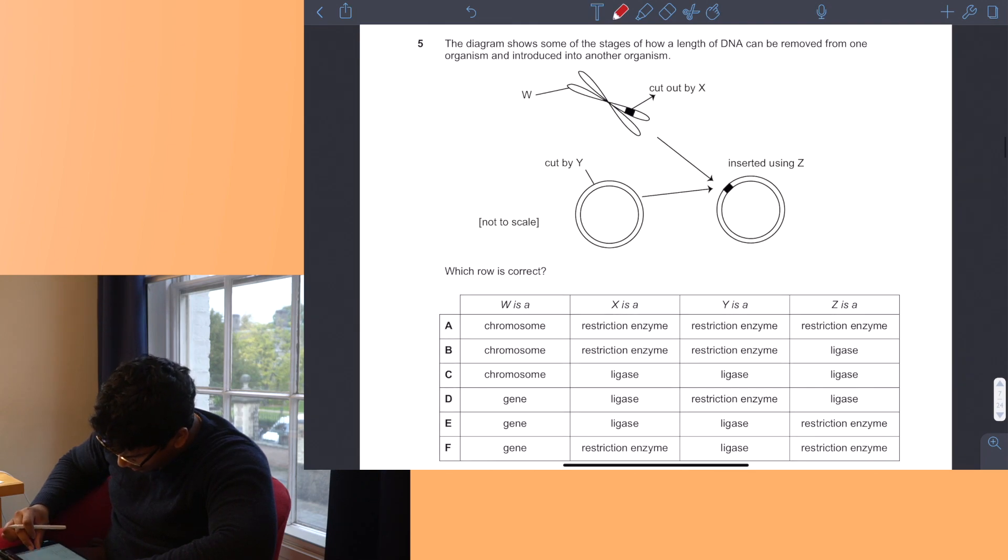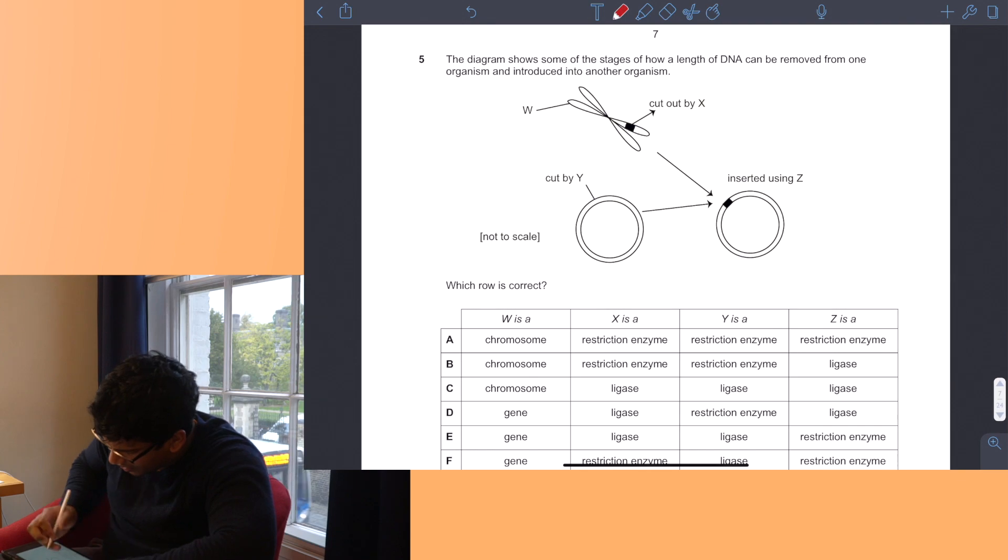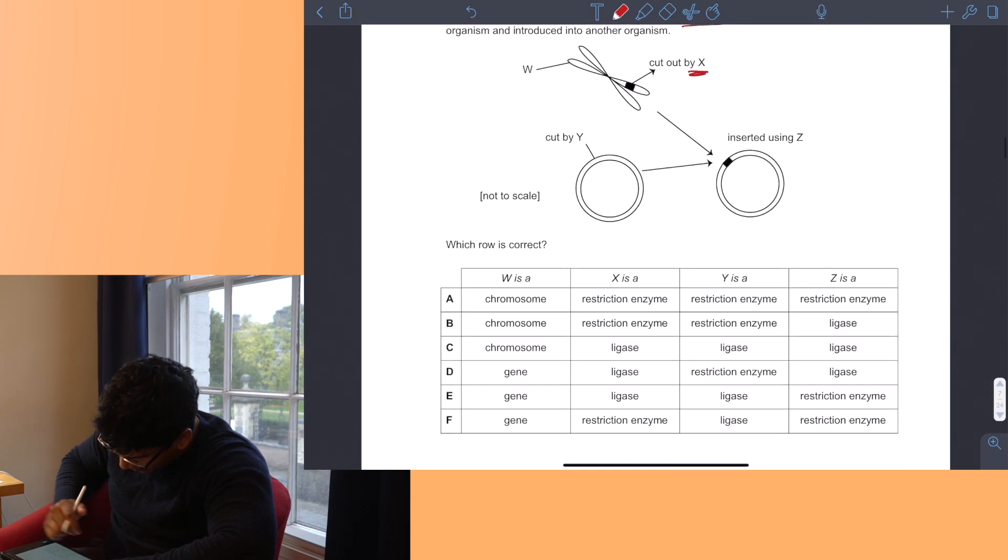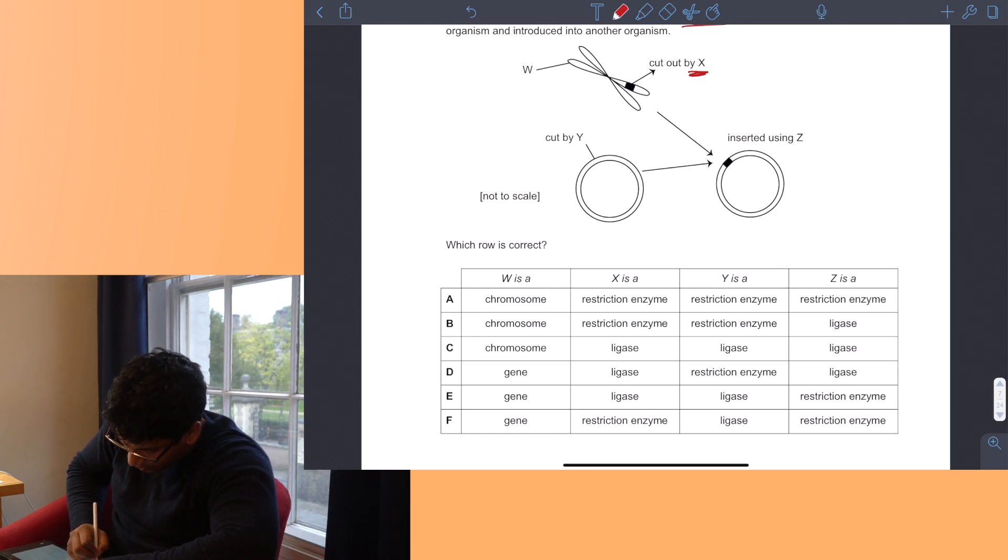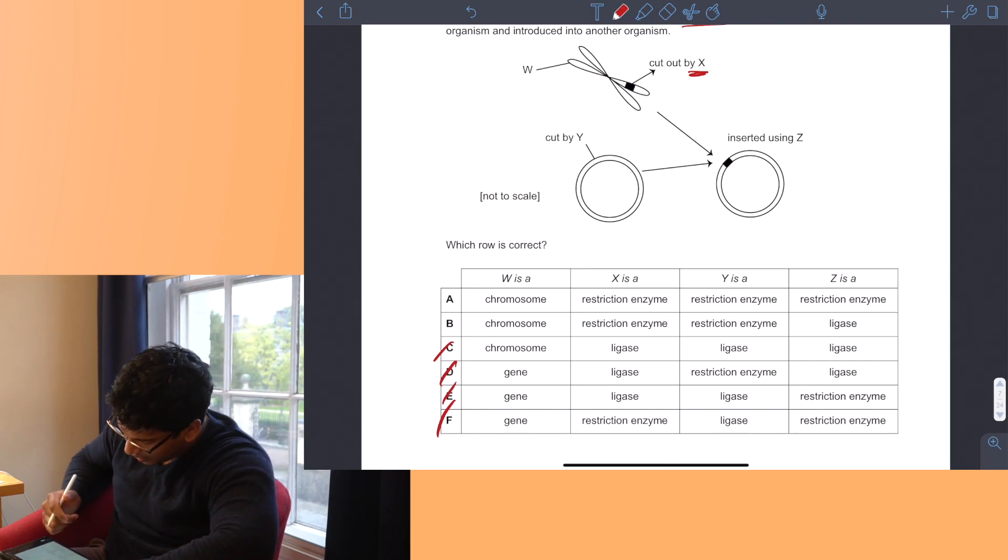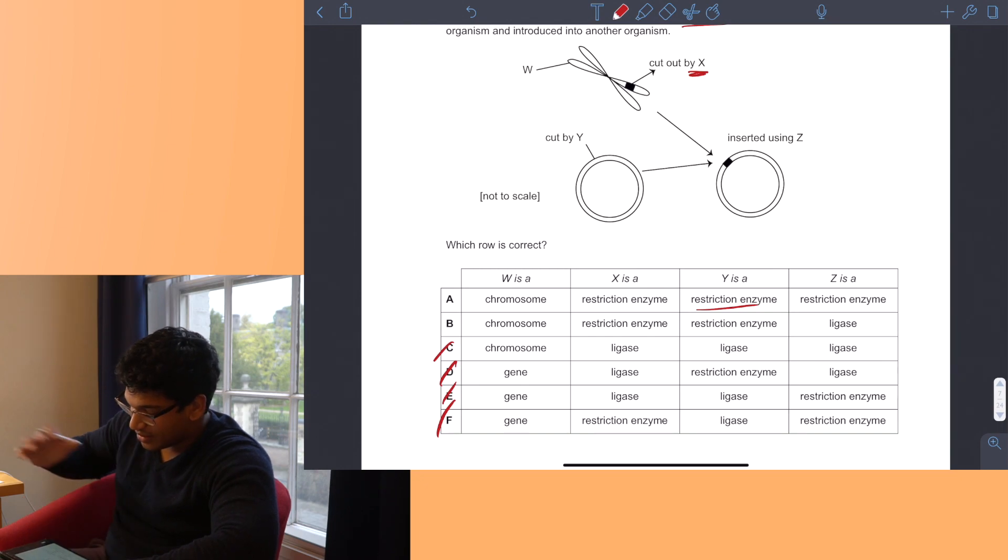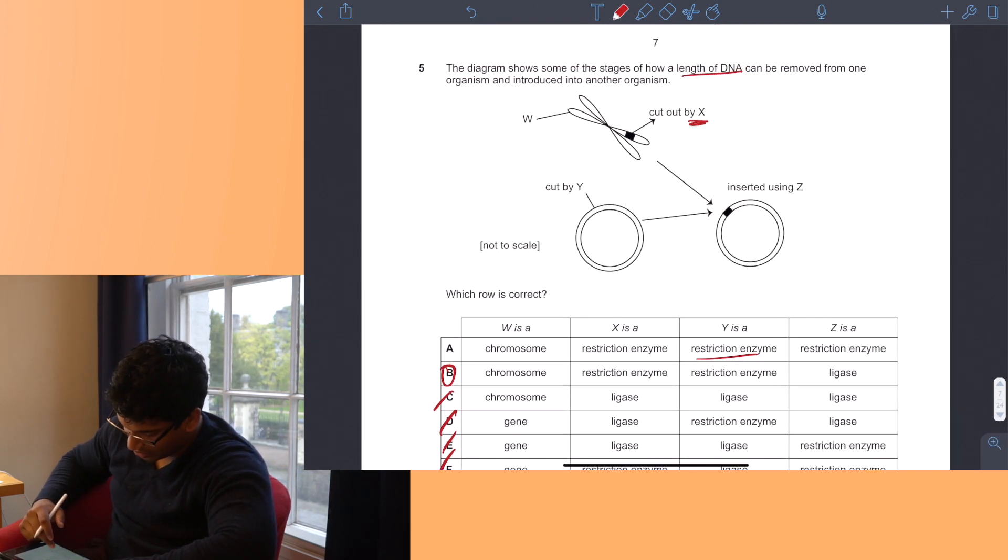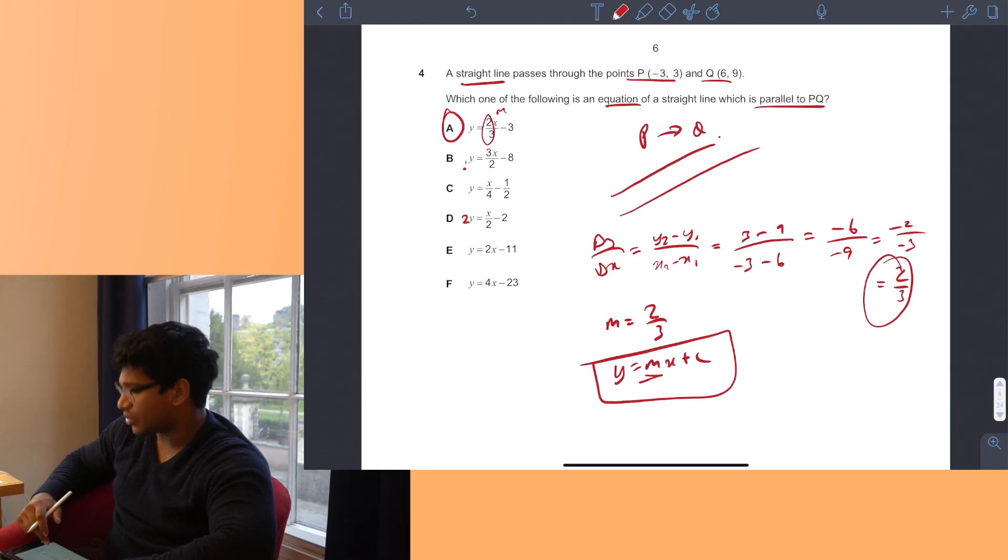Question 5. A diagram shows DNA being removed from one organism into another. W is a chromosome, not a gene, because a chromosome is made of many genes, so we can get rid of DEF already. X must be a restriction enzyme because restriction enzymes cut things and take out genes. If I cut with a restriction enzyme in one place, I must cut with the same restriction enzyme in another place to have the same sticky ends. So Y must also be a restriction enzyme, and the insertion is sealed by ligase. So the answer is B.